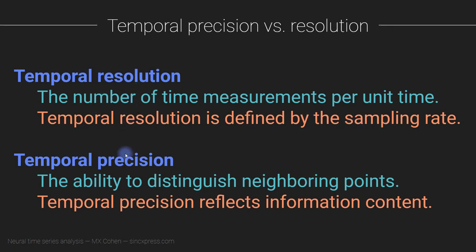Temporal precision, on the other hand, can be a little bit more difficult to quantify. The temporal precision is essentially the ability to distinguish neighboring points, and this is related to the information content in the signal and how quickly the dynamics of the signal are changing.